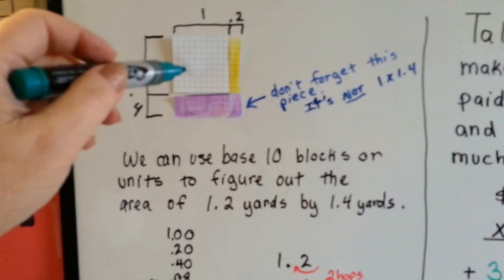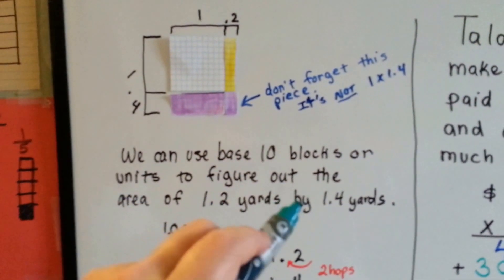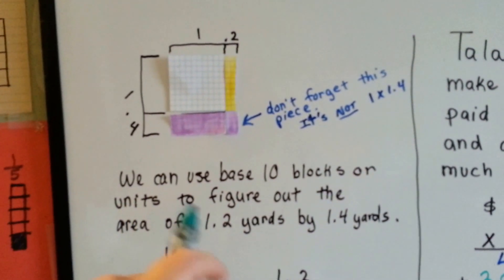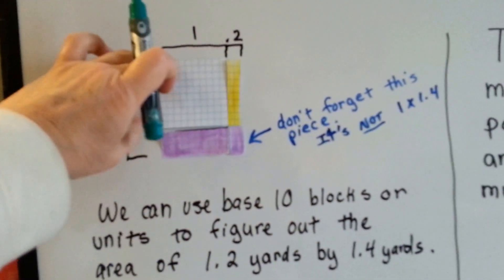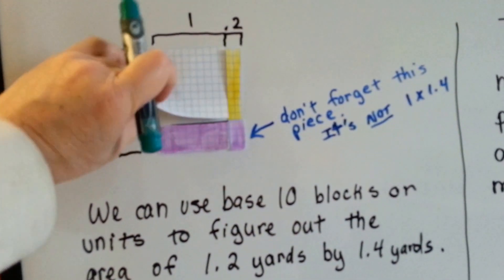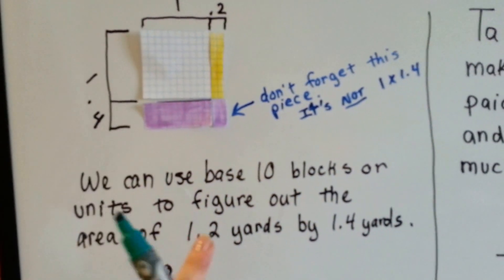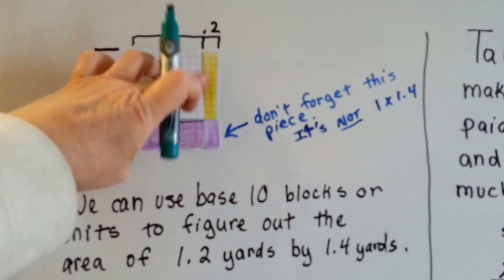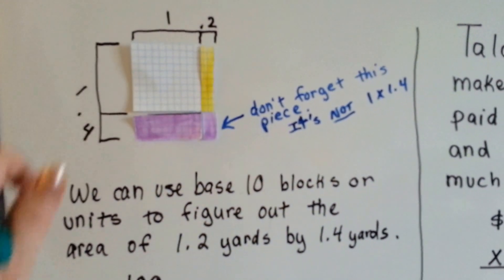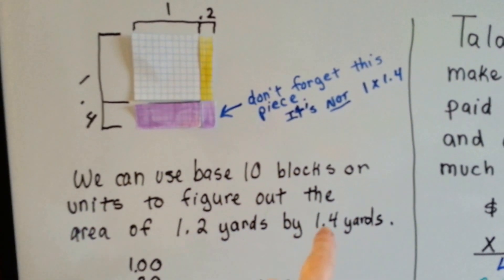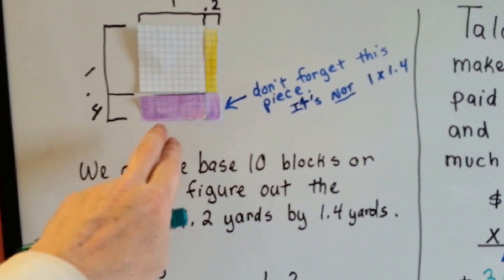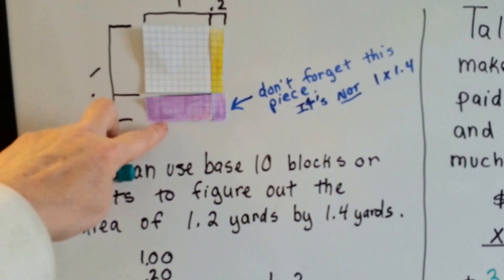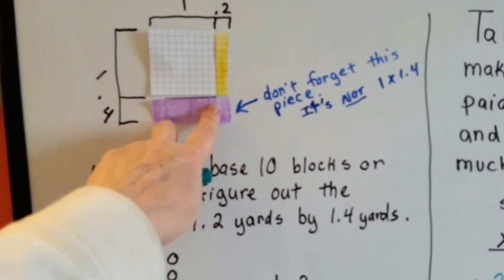If we wanted to multiply 1.2 yards by 1.4 yards, we start off with our whole 1 — that's this square right here, that's 100. And then for the 0.2, we have our 2 tenths right here; here's a 10 and here's a 10, that's 2 tenths. Then we have 4 tenths for the other one, so there's 1, 2, 3, 4 — 10 times going across.